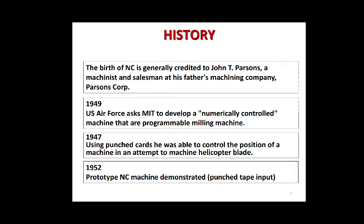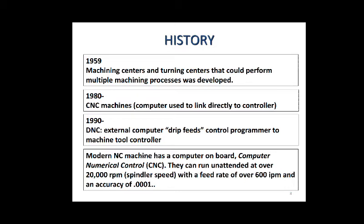In 1952, a prototype of the NC machine was demonstrated using punched tape input. In 1959, machining centers and turning centers that could perform multiple machining processes were developed. In 1980, CNC machines with a computer linked directly to the controller were developed. In 1990, DNC (Direct Numerical Control), where an external computer feeds control programs to the machine tool controller, was developed. Modern machines have a computer and keyboard, can run unattended at over 20,000 RPM, with a feed rate of over 600 inches per minute and accuracy of 0.001 inch.